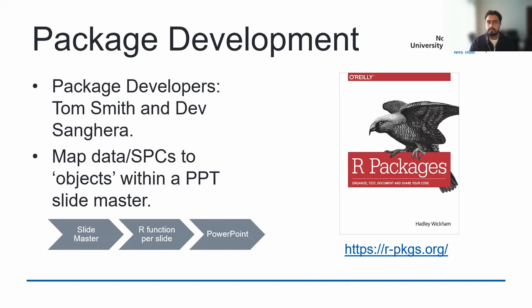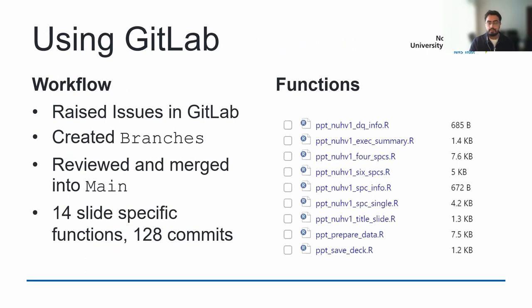Tom and I developed this package using Git to manage our workflow. We created issues for each of the different functions we wanted to create, made feature branches, reviewed them, and merged them into our main branch. In total, we created around 14 different types of functions. You can see on the right we have a function for a four-SPC slide, another for six SPCs, one for a single SPC, an exec summary, and a title slide — 14 different ways to customise your report.